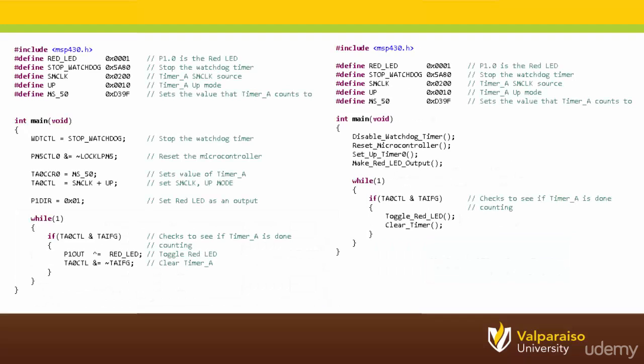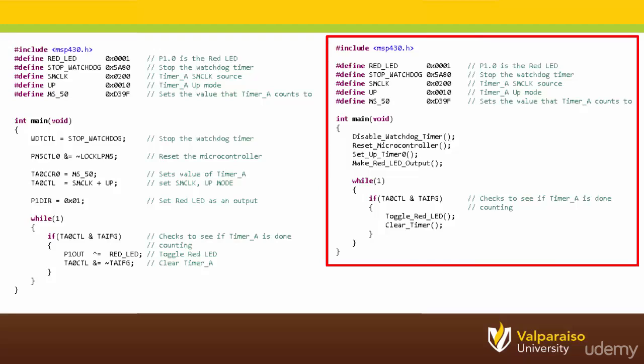To get a better appreciation of how functions can make your programs easier to read, take a look at these two programs. Both perform the same task of toggling a red LED on and off. Which one do you think is easier to read? I'm guessing that you think the one on your right is more straightforward. It uses words that are much more intuitive.